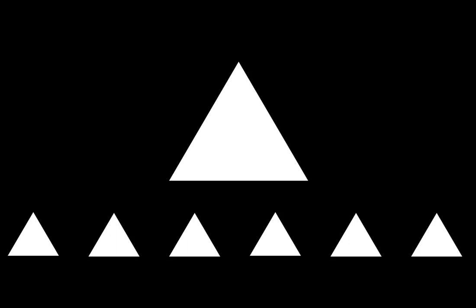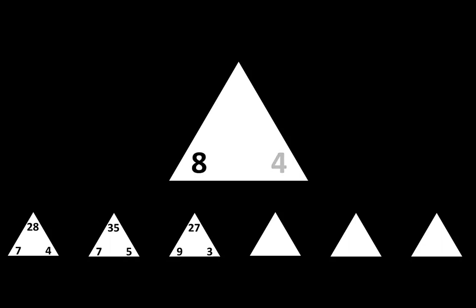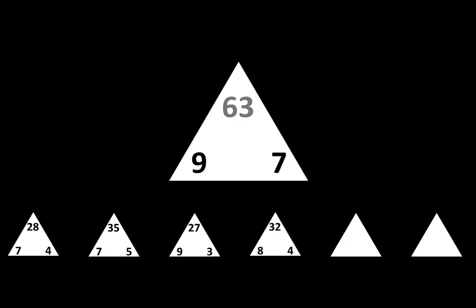Let's move to the next row. The next one is 7 times 4 is equal to 28. The next one is 7 times 5 is equal to 35. The next one is 9 times 3 is equal to 27. The next one is 8 times 4 is equal to 32. The next one is 9 times 7 is equal to 63. The next one is 9 times 5 is equal to 45.